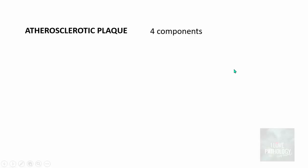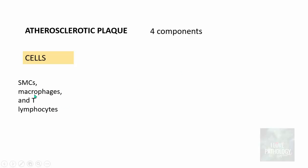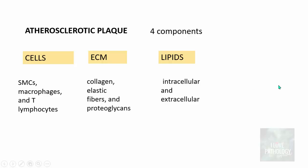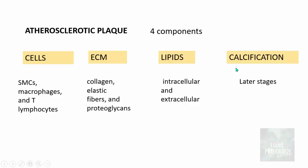Atherosclerotic plaques histologically have four components. First, cells — which could be smooth muscle cells, macrophages, and T-lymphocytes. Second, the most important component is the extracellular matrix, predominantly made up of collagen, elastic fibers, and proteoglycans. Third, the lipids forming the core of the plaque — lipids can be intracellular as foam cells, or extracellular between the cells. The fourth component is calcification, not seen in all lesions but present in later-stage lesions — this is a dystrophic type of calcification.